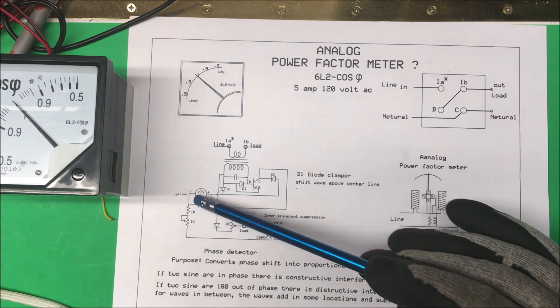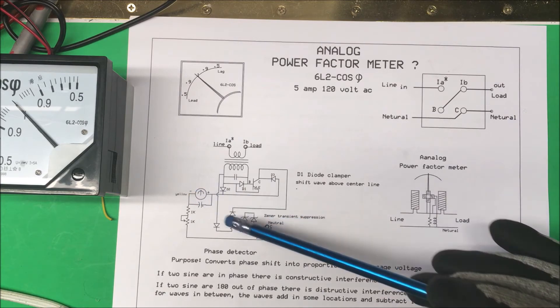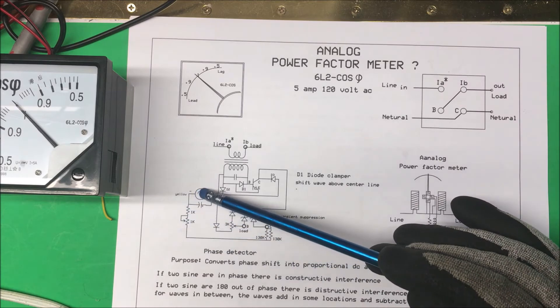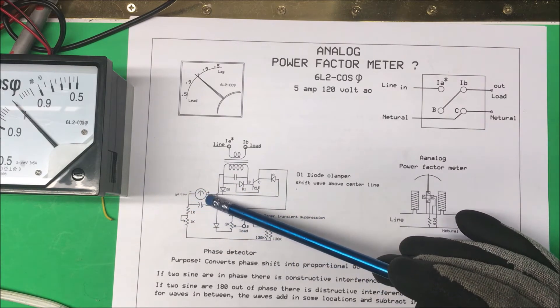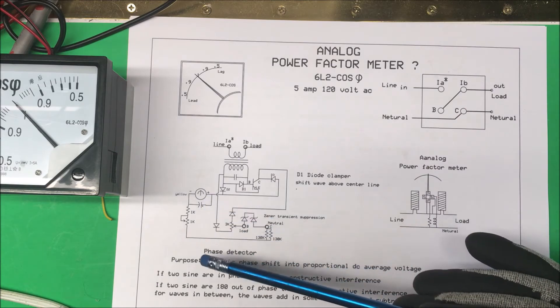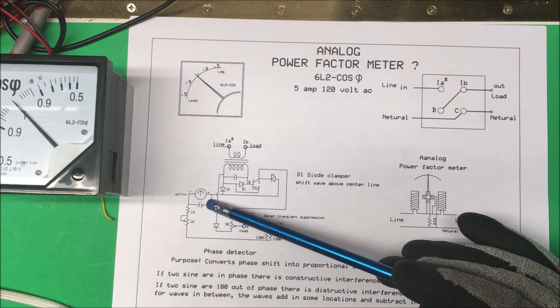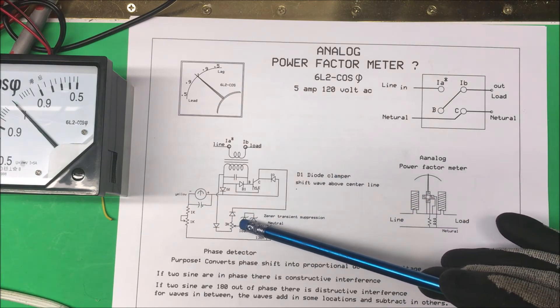These two diodes are zener diodes for transient suppression. Then we have a pot. The negative side of the meter here comes off the neutral, goes through some resistance and back up to the negative side of the coil here. There's an electrolytic capacitor across that coil, negative side on this side and positive over here.